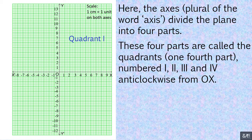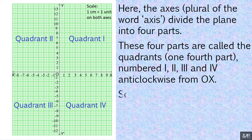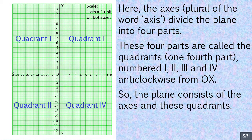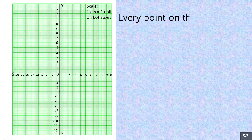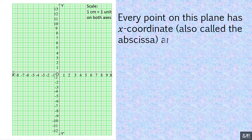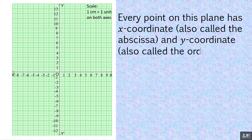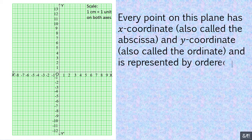Quadrant 1st, Quadrant 2nd, Quadrant 3rd, Quadrant 4th. So the plane consists of the axes and these quadrants. The axes are called the coordinate axes. Every point on this plane has an x-coordinate, also called the abscissa, and a y-coordinate, also called the ordinate, and is represented by the ordered pair (x, y).